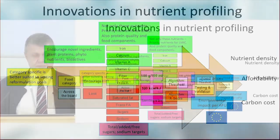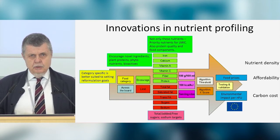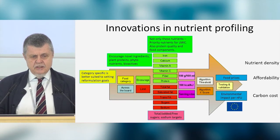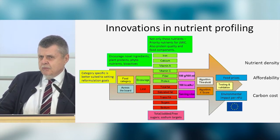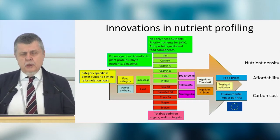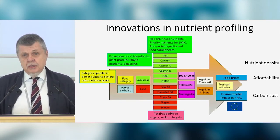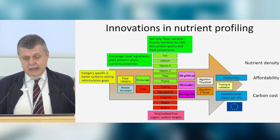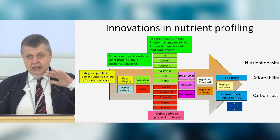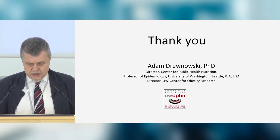Innovations in nutrient profiling — it's an evolving field, not static. Nutri-Score is being revised, the Health Star rating is being revised, and I'm revising the scores. Category-specific approaches are important. We need to encourage novel ingredients, especially plant proteins and phytonutrients — the data are not there yet but they will be. We want to look at protein quality and nutrients for low- and middle-income countries, and combine nutrient density metrics with affordability and carbon cost. Thank you.